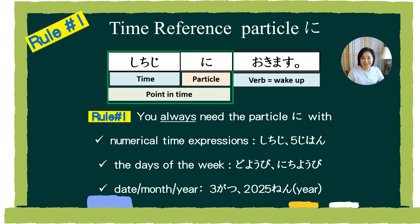それでは、文のストラクチャーを勉強しましょう。This is the sentence structure with the time-reference particle に. You have a time word and you have a verb — in this case, to wake up. You connect these two words with the particle に. The rule is you always need to use particle に with numerical time expressions, for a specific point in time. You also need に with the days of the week like Sunday or Monday, and you need particle に to show date, month, and year.